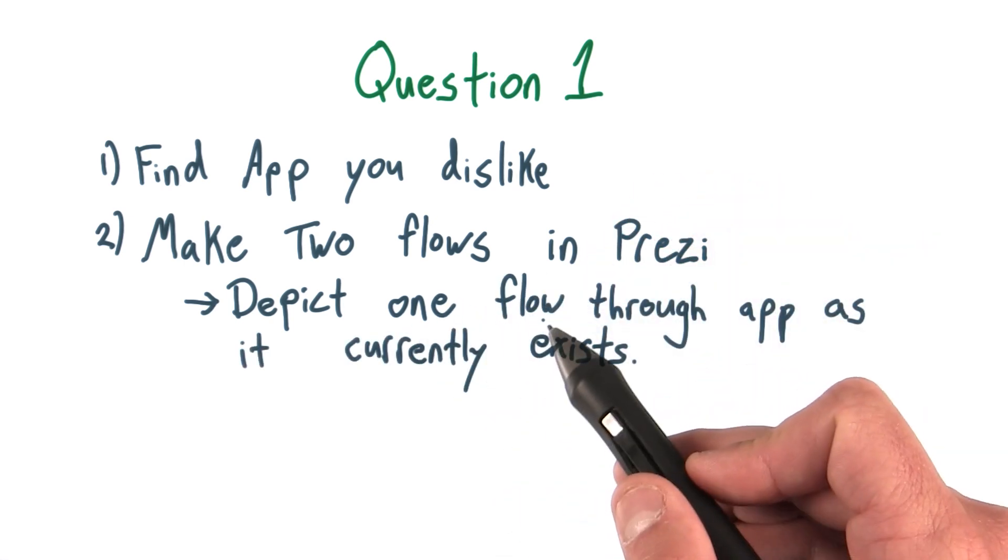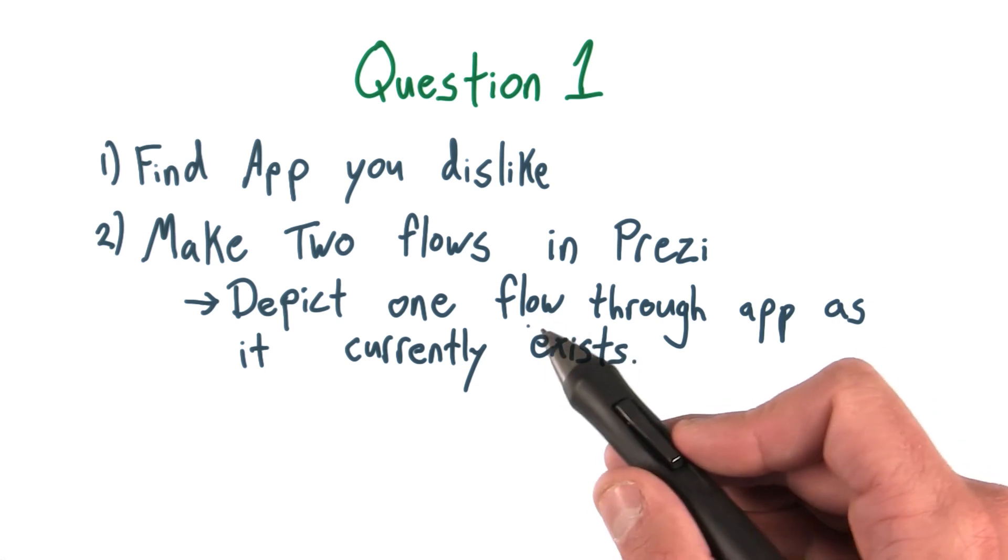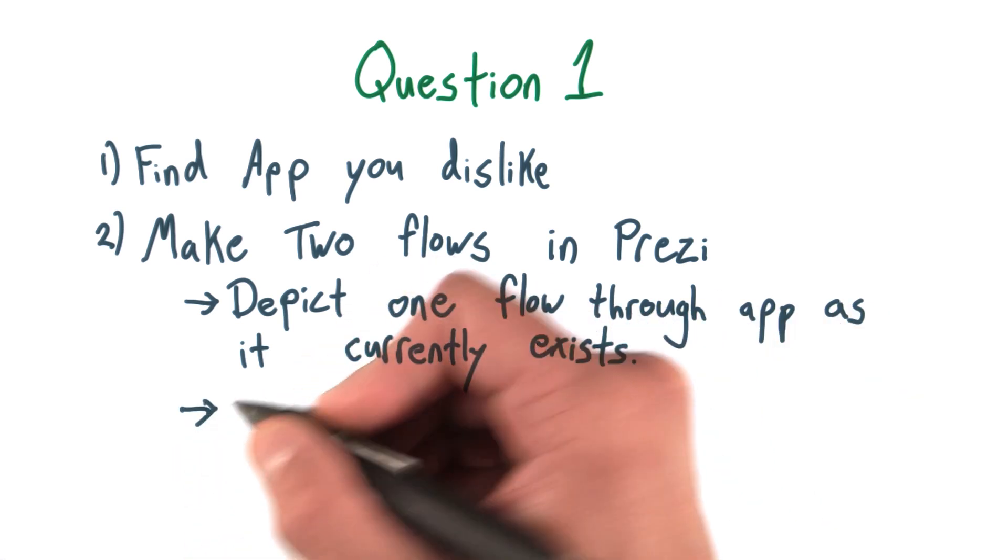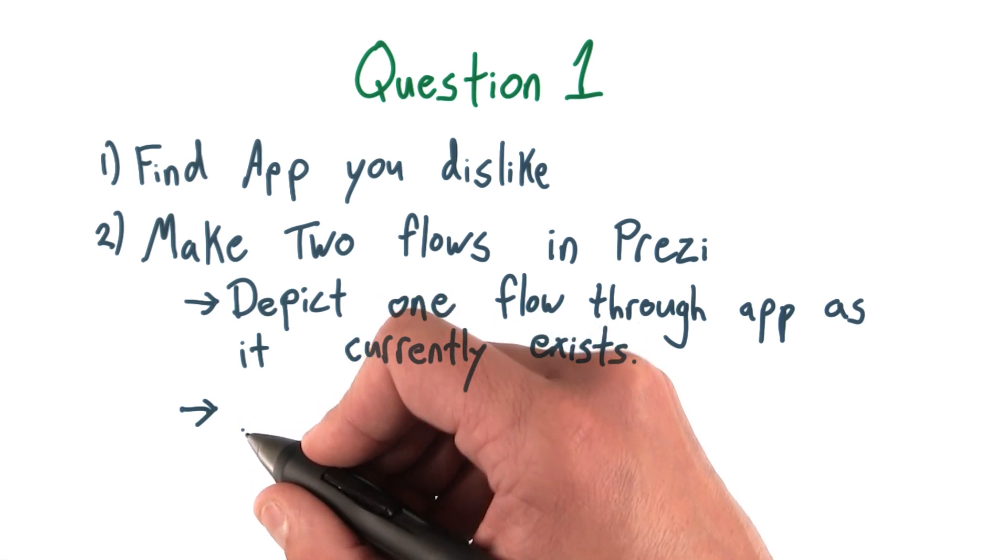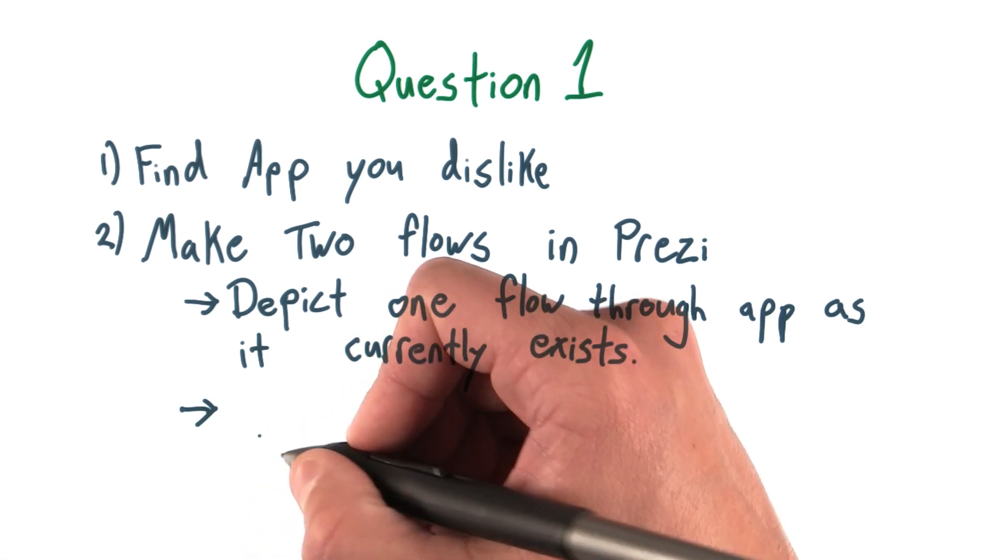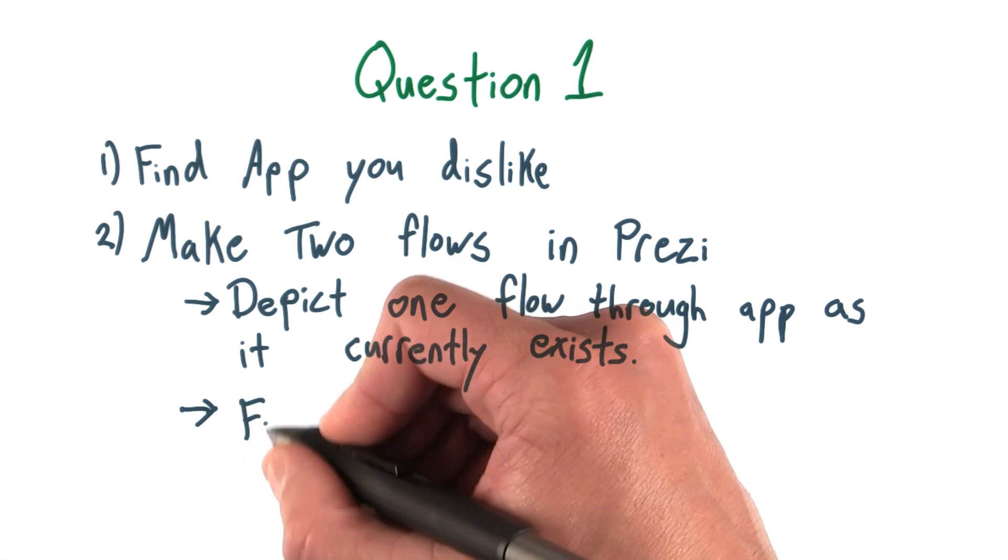I say one flow because complex apps can have a complicated hierarchy of potential flows. After you do this, you're going to think at a high level about what about this flow is making you unhappy, and then you're going to fix it.